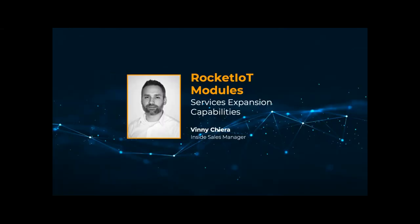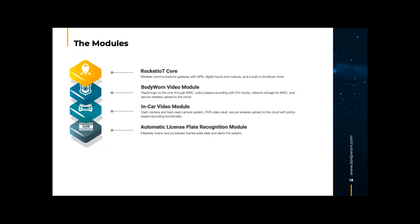Up next is Vincent Chiera, our Inside Sales and Customer Satisfaction Manager. You should see four modules currently presented in the Utility ecosystem. We're going to do an overview of what those modules consist of. So if you have a mixed fleet of devices — let's say you're running Rocket IoT Communications but don't have body cameras, or have body cameras but don't have Rocket IoT Communications — we're going to take a deeper dive into why it's a good idea to pair these devices together because they work together in the same ecosystem.